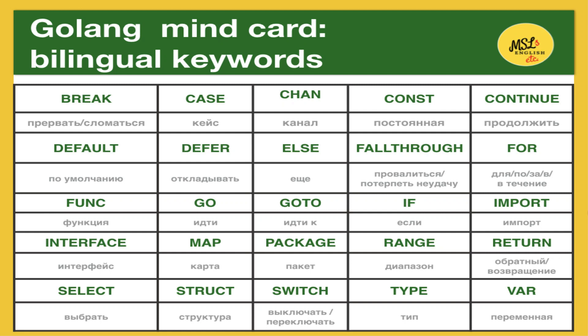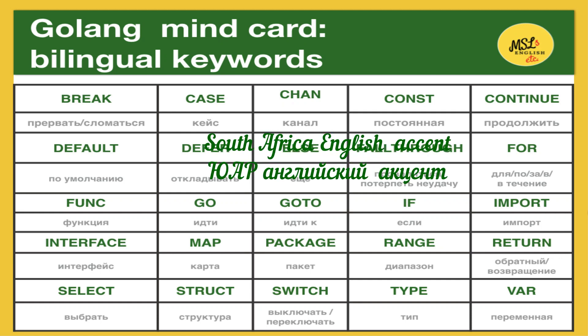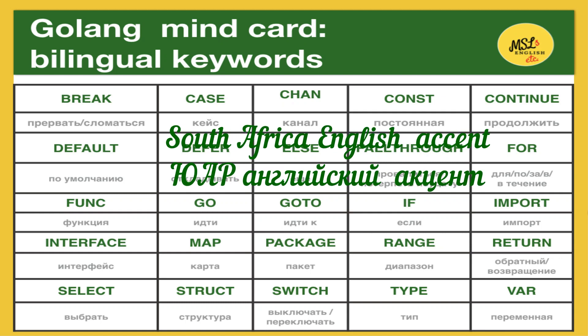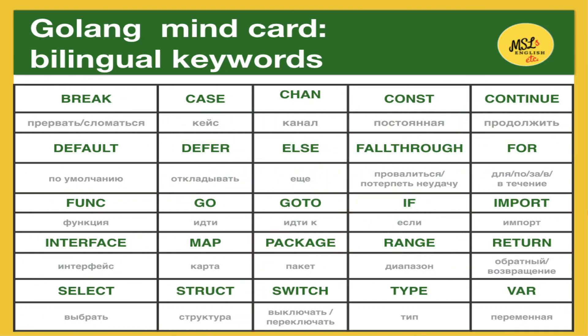I will speak with the South African English accent at normal tempo. Break. Case. Chan. Constant. Continue. Default. Defer. Else. Fallthrough. Func. Go. Goto. If. Import. Interface. Map. Package. Range. Return. Select. Struct. Switch. Type. Var. Guys. Well done.